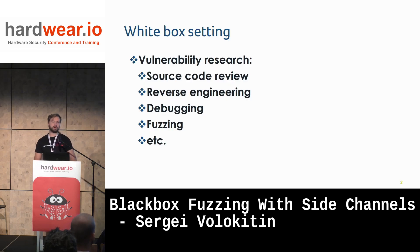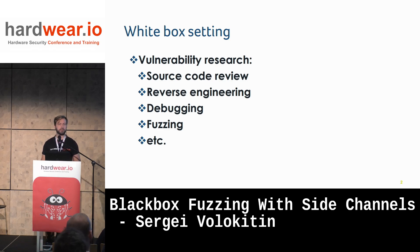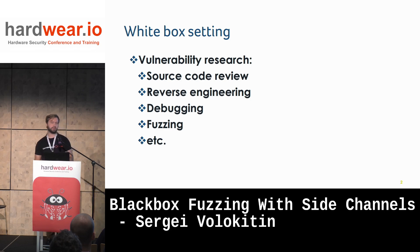So what's the idea? When we are in a white box setting and we want to do vulnerability research — find bugs in a product — there are a lot of different methods. If we have source code, we can do source code review. If we have binaries, we can do reverse engineering. We can debug, fuzz by compiling, or emulate for a specific platform. There are quite a few methods available.